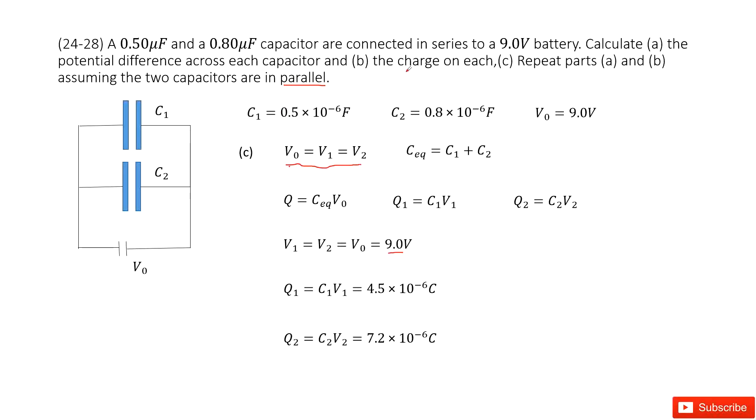Next we can find the charge on V1 and V2. V1 equals Q1, V2 equals Q2. For Q1, we can write it as C1 times V1. For Q2, we can write it as C2 times V2. Input all the given quantities and you get the answer. Thank you.